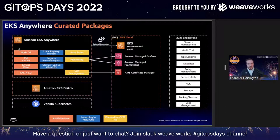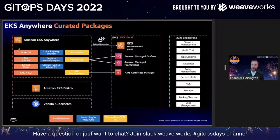On the left you can see the things we already provide today and the technologies we've decided on, which most likely will not change. On the right, the 2023 and beyond items are optional packages we'll start adding over time that you're able to use along with EKS Anywhere. If you do decide to use those, they would be supported if you purchase support through us.